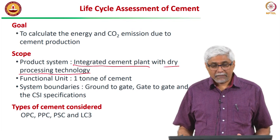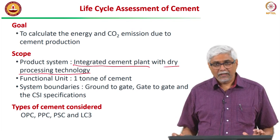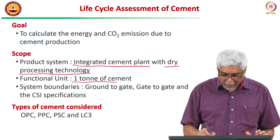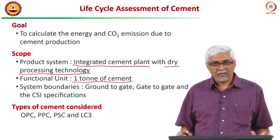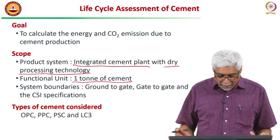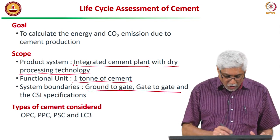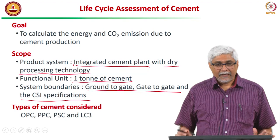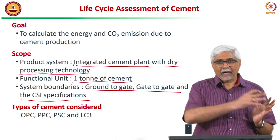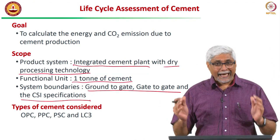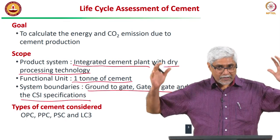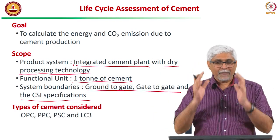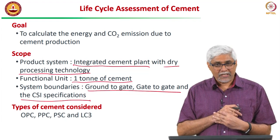The functional unit — what our numbers will look at — is the emissions and impact for 1 tonne of cement. We will be looking at three systems: ground to gate, from the mine up to the gate of the cement plant; gate to gate, what happens within the cement plant; and the CSI specification, which focuses mainly on the clinkering process.